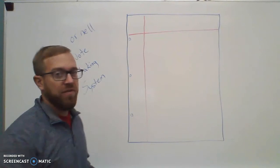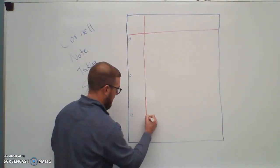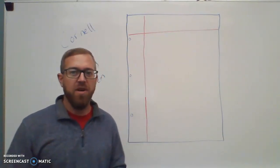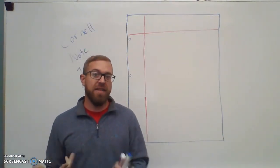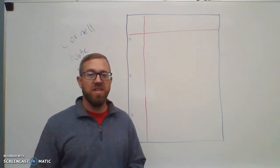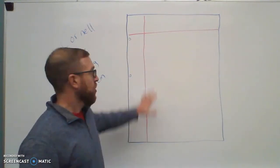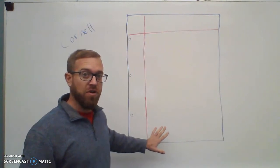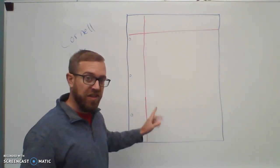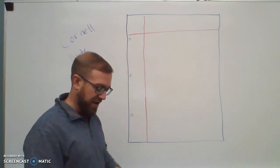Cornell notes. First of all, you have a piece of paper here. This looks like a normal piece of loose-leaf paper, right? What you're going to do is divide this paper into three sections. A lot of pieces of loose-leaf paper have the line on the left-hand margin already there. You can use this line if you want, or you can draw another line next to it.